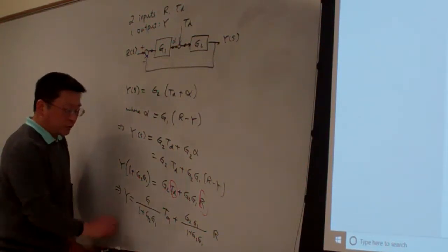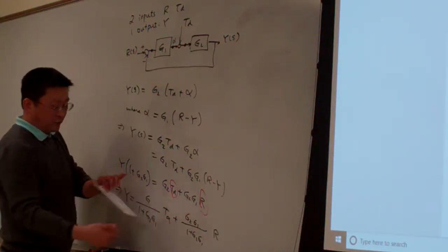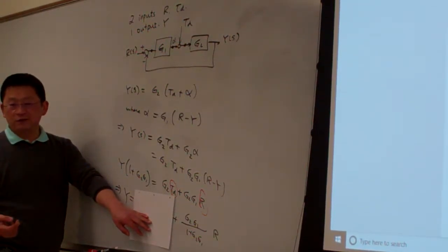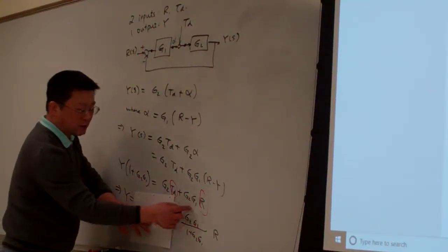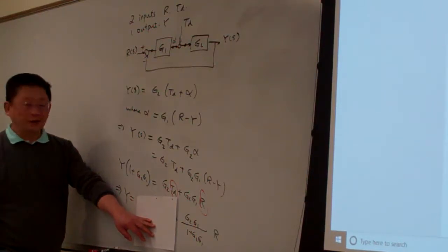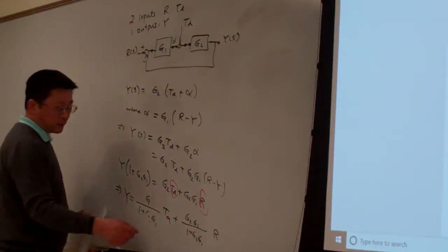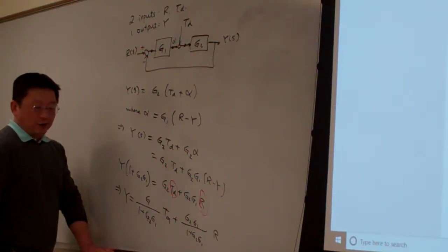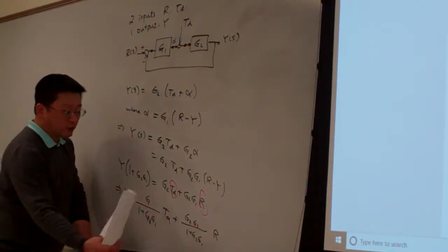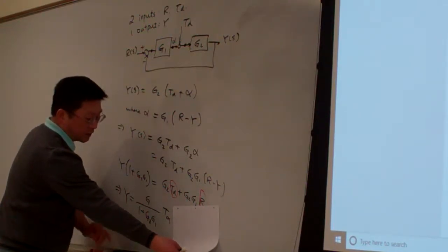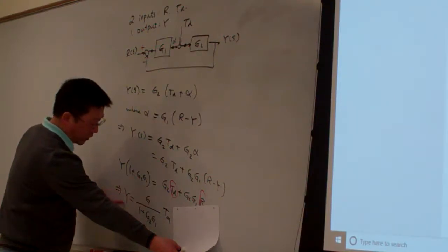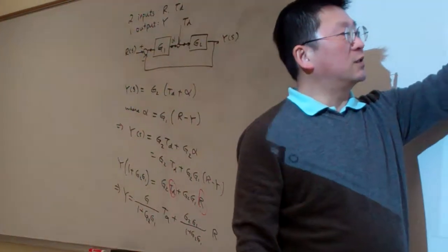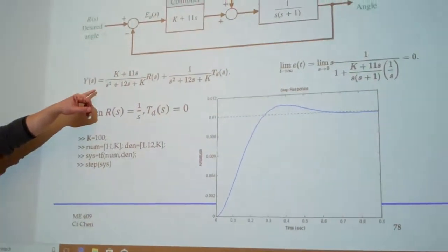For example, if you assume there's no disturbance, then this term can disappear when not considering the influence of the disturbance. Under that situation, this is the transfer function between Y and R. On the other side, if we want to consider the influence of the disturbance to the output, then we try to assume R equal to 0. Then this is the transfer function between the output and the disturbance. This is a complete description of the system.